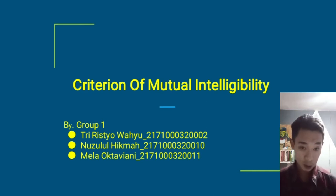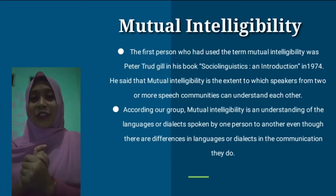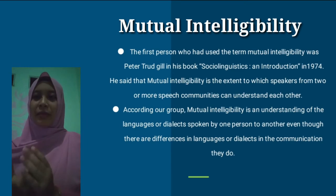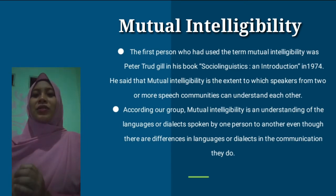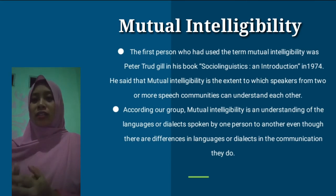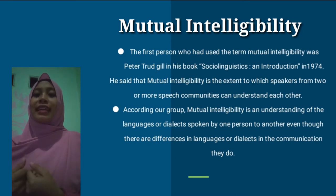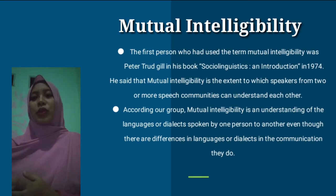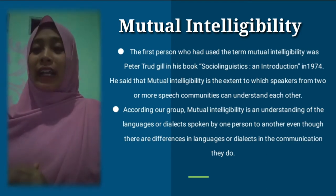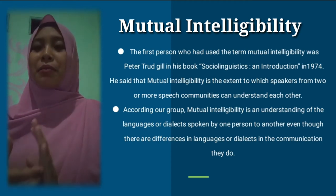Thank you. I'm Nuzulul Hikmah, the first speaker from group one. I'll try to explain about mutual intelligibility. According to Peter Trudgill in his book Sociolinguistics, mutual intelligibility is the extent to which speakers from two or more speech communities can understand each other. According to our group, mutual intelligibility is an understanding of languages or dialects from one person to another, even though there are differences in languages or dialects in the communication they do.